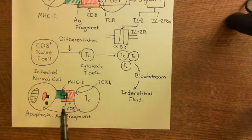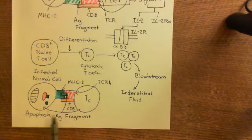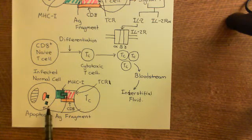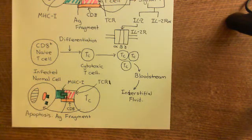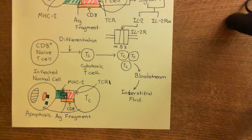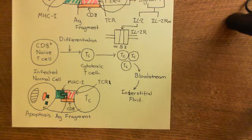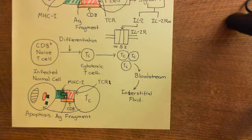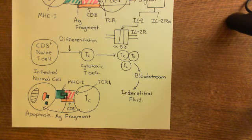This apoptosis is induced via the extrinsic pathway — specifically the FAS-FAS ligand pathway. The cytotoxic T-cell has the FAS ligand on its surface, which binds to FAS receptors on the surface of the infected cell, triggering the apoptosis pathway. For more on the FAS-FAS ligand pathway, there is an entire video on that pathway in the cancer playlist. In the next video, we will turn our attention to the immunosuppressants. We have now seen three adaptive immune responses to three separate types of pathogens, concluding the discussion of the adaptive immune system.